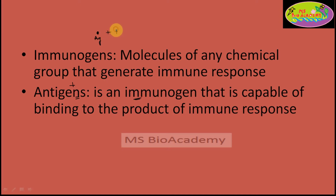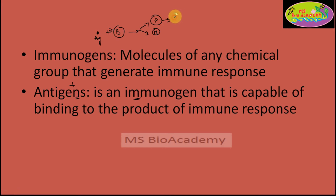In the blood circulation, immune cells — let's suppose B cells — encounter this antigen with their B cell receptors. The moment it binds with the B cell receptors, the B cells get differentiated and form plasma cells and memory cells. Plasma cells secrete antibodies that are specific to this particular pathogen. So the product of this immune response is the antibodies.